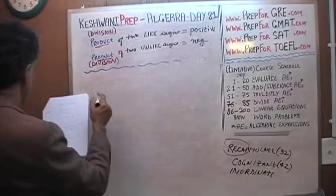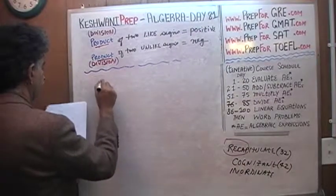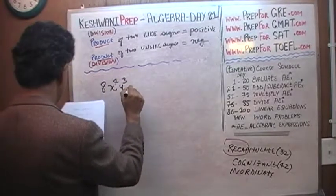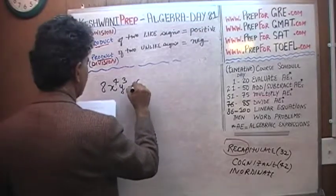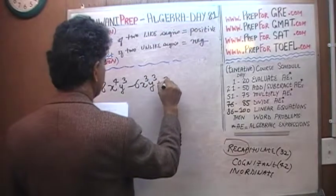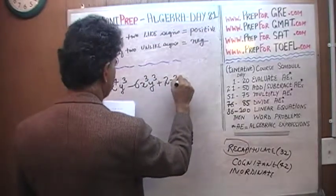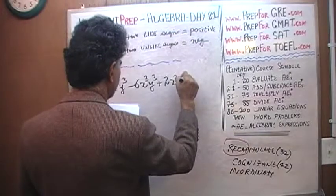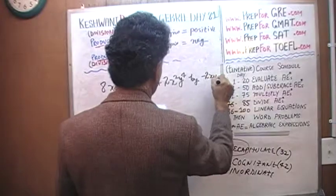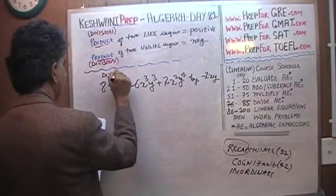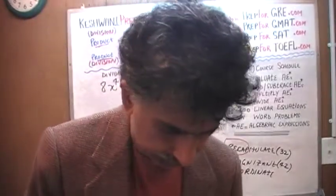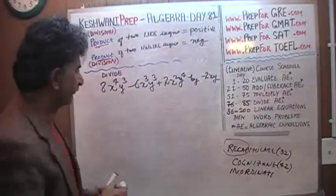The problem for today is: 8x raised to the 4th, y cubed, minus 6x cubed y cubed, plus 2x squared y to the 4th, divided by negative 2xy. We are being asked to divide this first expression, which has three terms.